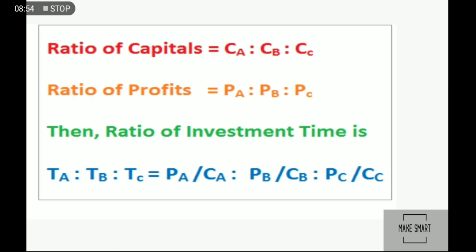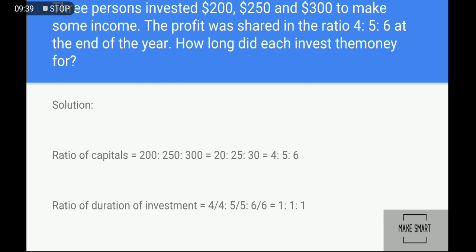Next, if more than two partners are involved, and the ratio of capital and the same time period are used — if capital and profit are given, you can find the time period using the formula: profit divided by capital equals time period. Since profit equals time multiplied by capital, if you want the time, divide profit by capital to get the time period ratio.